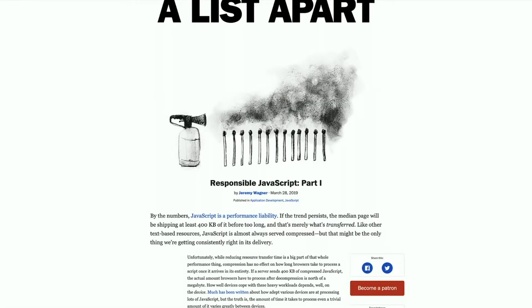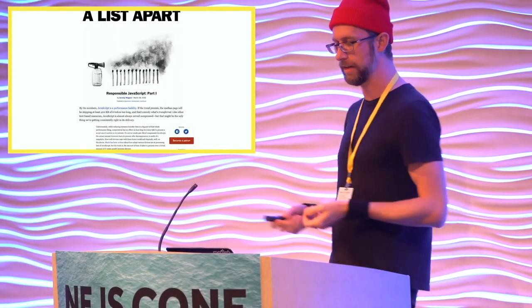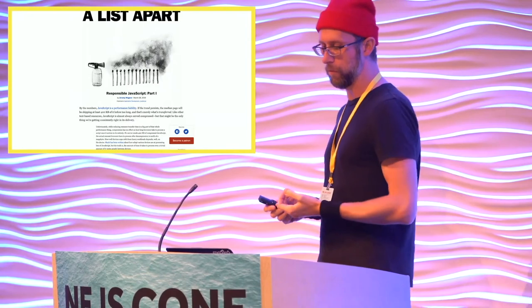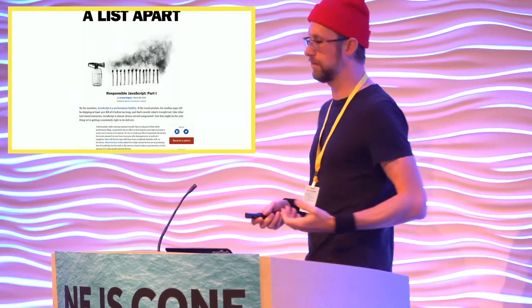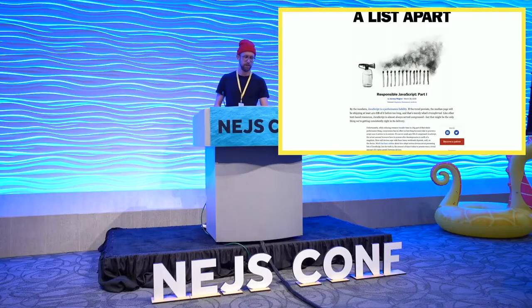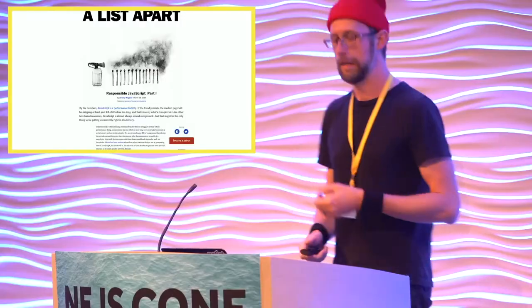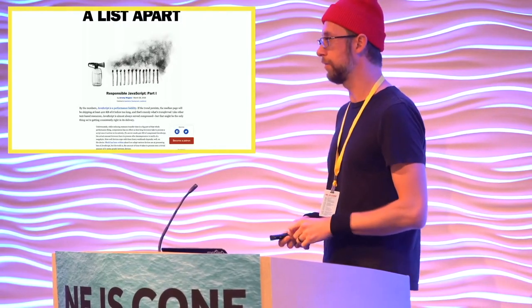This talk is based on a series of articles for A List Apart, eponymously named, which is a collection of ideas and techniques about getting JavaScript performance under control, but it's wrapped in a philosophy. The philosophy is: let's just try to use JavaScript a little bit more responsibly, a little more thoughtfully. So if you like this talk, you might like these articles.